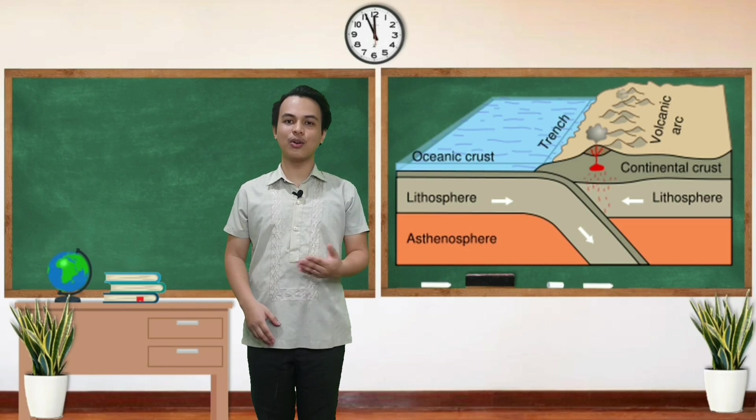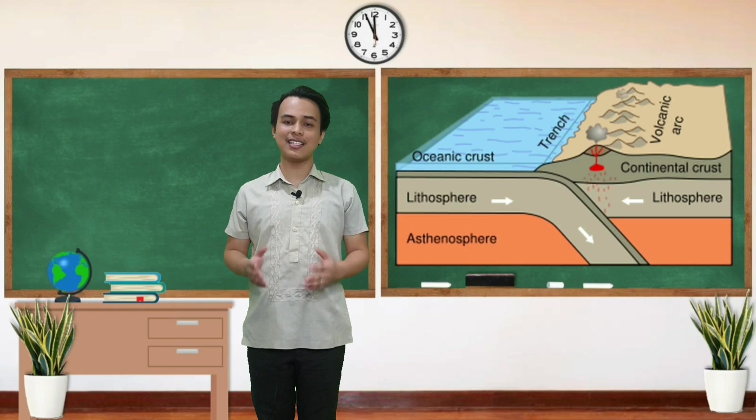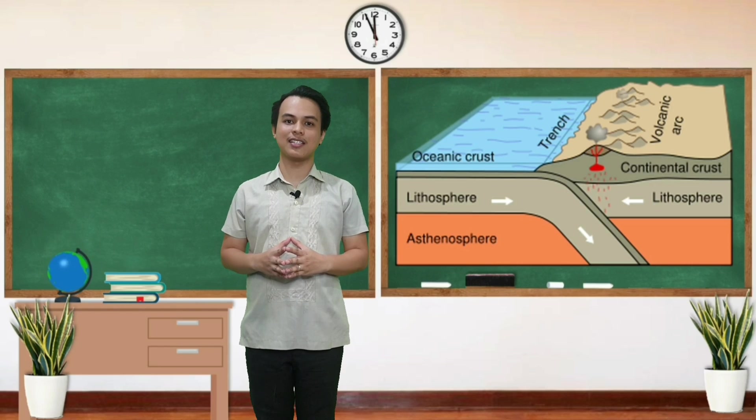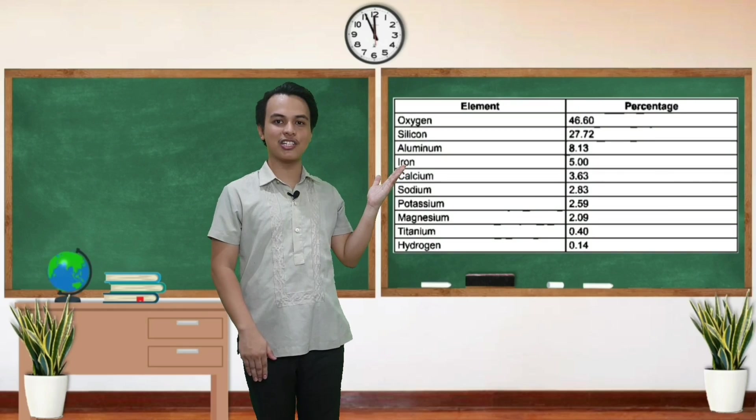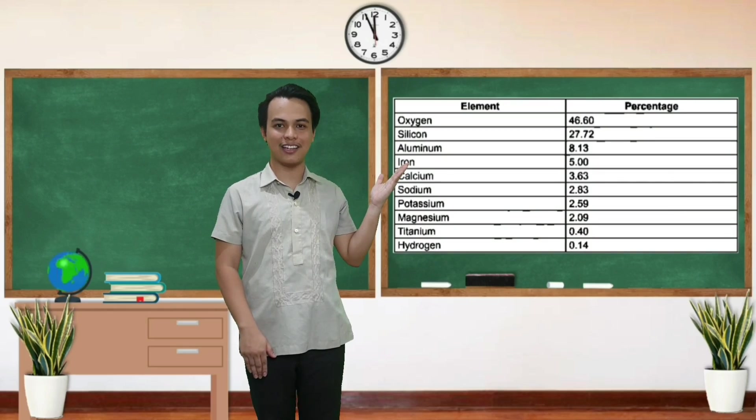Kung ipaghahambing ang bigat ng oceanic crust at continental crust ay mas mabigat ang oceanic crust. Narito naman ang table na nagpapakita ng percentage na mga elements na may kita sa ating crust.